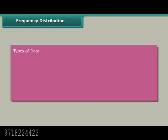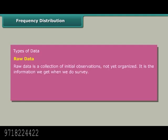Frequency distribution. Types of data: Raw data is a collection of initial observations not yet organized. It is the information we get when we do survey. It can be classified into two types.